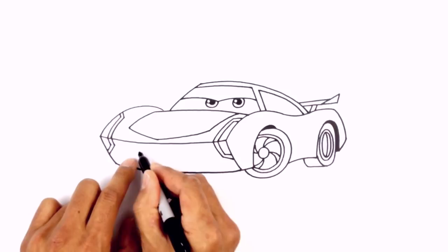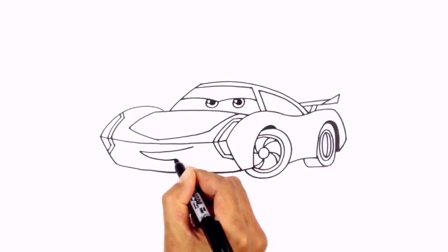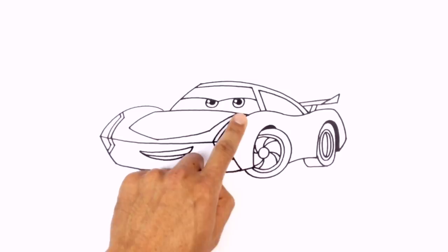Down here we're going to add in the mouth. We're going to start on the left side, curving slightly upwards towards the right. We'll take that same starting point, curve down and then back up towards the right side. Now we're going to add the teeth line — from that same starting point we're just going to cut this in half, going straight across the middle over towards the right side.